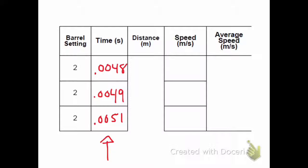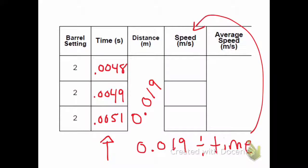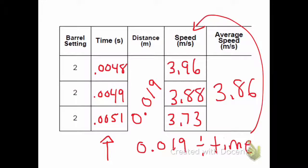The distance for the marble is always 0.019 meters, or 1.9 centimeters, which is the diameter of that marble. So we're going to take 0.019, divide it by the time through the photo gate, and that'll give us the speed. So our three speeds are 3.96, 3.88, and 3.73 meters per second. Average those together, and you get 3.86 meters per second.